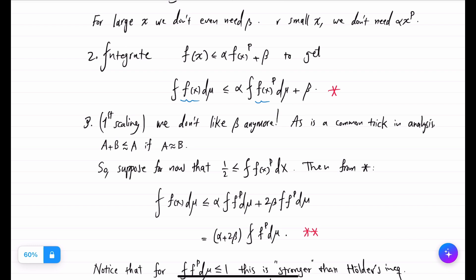And here this is a common trick in analysis. When you want to get rid of one of the quantities, you can do so if you know that the two terms are comparable in size. So therefore if we assume something like integral of f to the p is not too small.